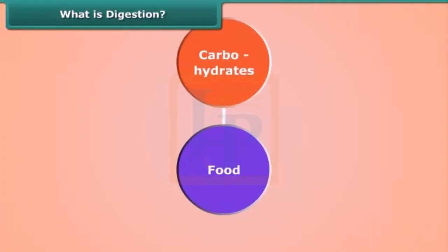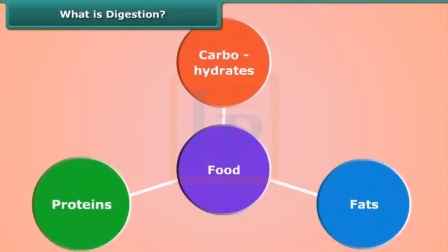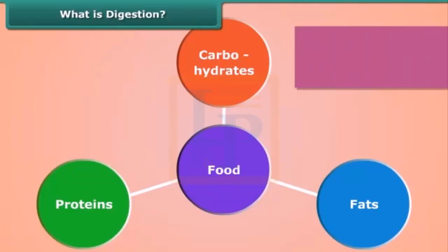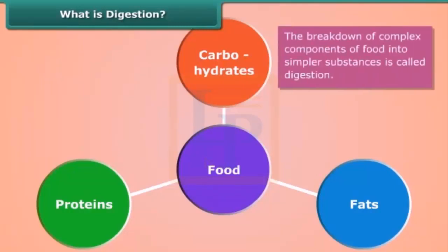We all know food is made up of complex substances like carbohydrates, fats, and proteins. We cannot utilize these substances as such, so they are broken down into simpler substances. The breakdown of complex components of food into simpler substances is called digestion. Let us study digestion in human beings.